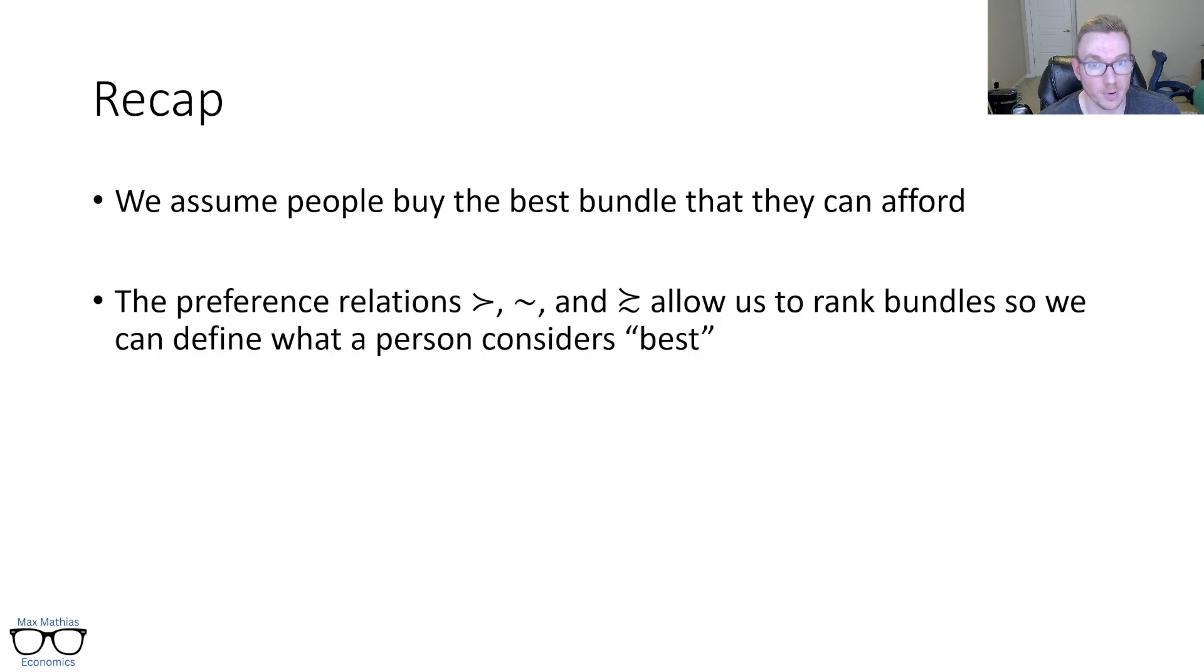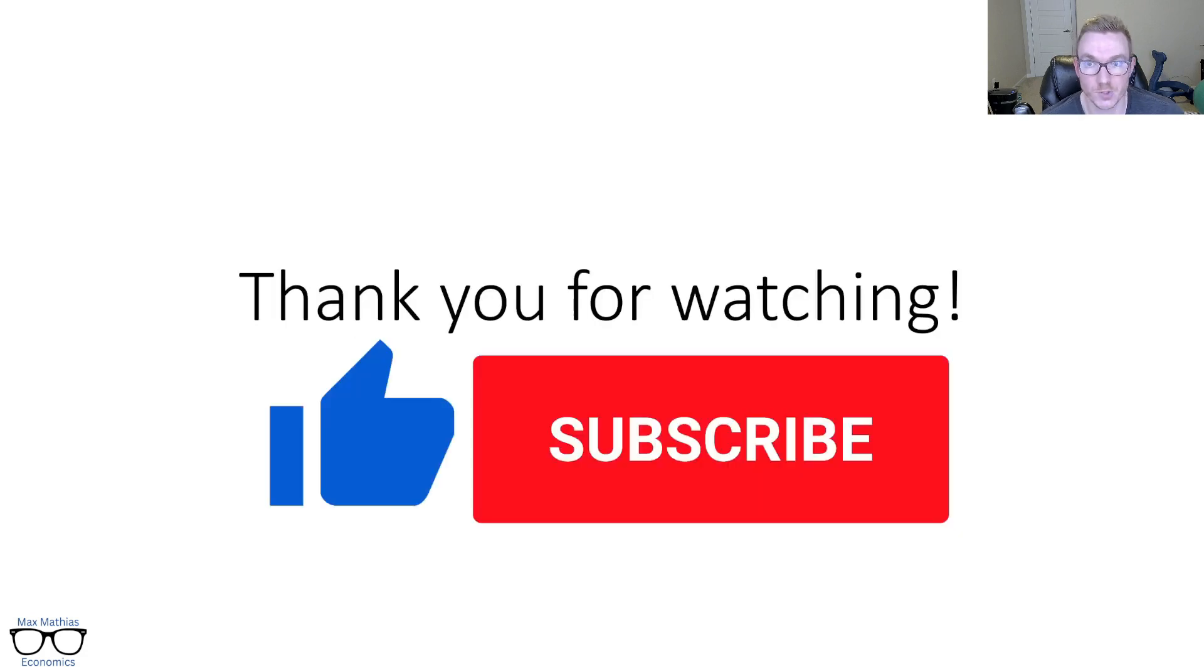So recap. This is a short video. We assume people buy the best model that they can afford. That preference relation, those three individual ones allow us to rank bundles so we can define what a person considers best. Simple as that. You could give me two bundles. You can give me a million bundles. As long as I can go through and rank them all, I can tell you what that best aspect is of consumer behavior. So with that, thank you so much for watching. If you got something out of this video, please consider liking and or subscribing and I'll see you next time.